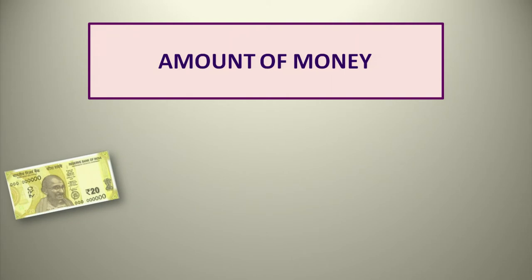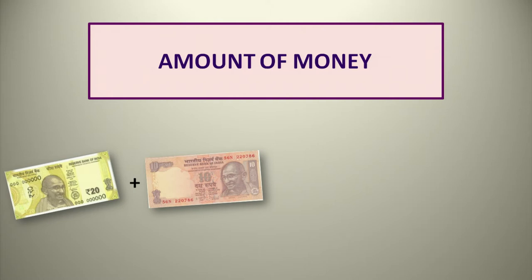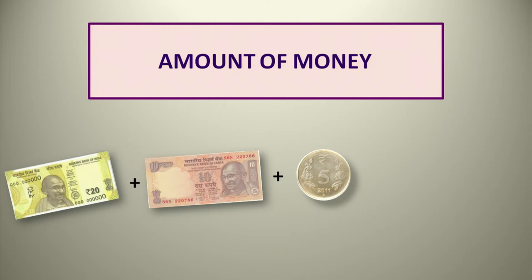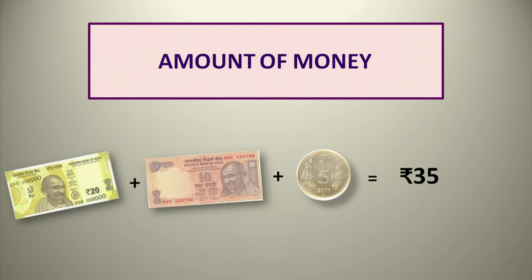Now moving to the next — here we are going to calculate the amount of money. I have given you one 20 rupee note, one 10 rupee note, and one 5 rupee coin. You have to calculate the total amount. How? By adding: 20 plus 10 equals 30, and 30 plus 5 equals 35. So the total is rupees 35.